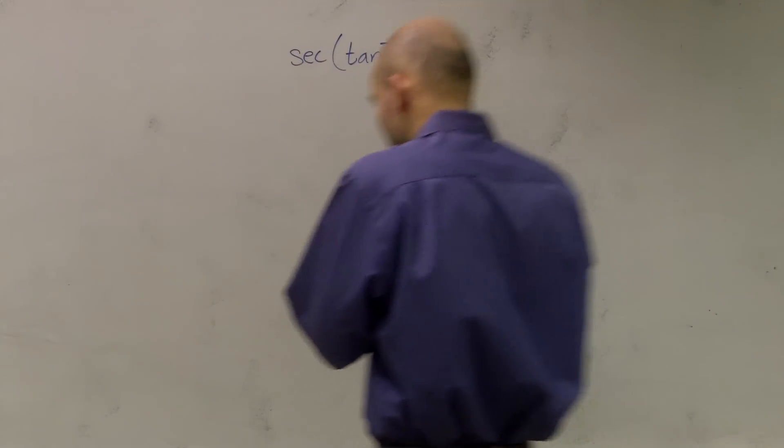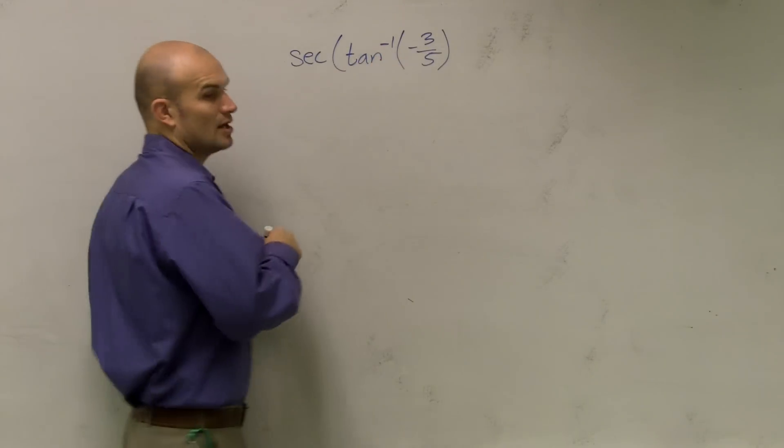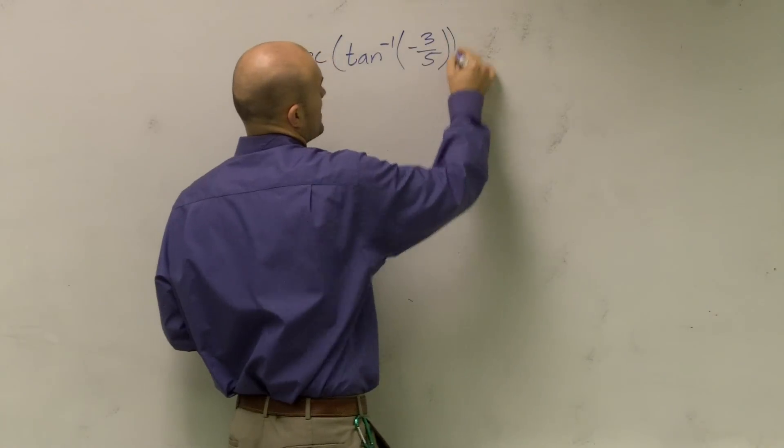Alright, so ladies and gentlemen, for this problem what you're asking us to do is take the inverse tan of negative three-fifths and then take the secant of that value.